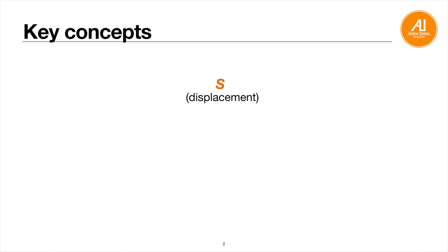Let's go through some key concepts first. Displacement is represented by the symbol S, velocity is V, and acceleration is A. For those of you who are familiar with physics kinematics, these are quite similar. Now let's see how we're going to include differentiation and integration into this topic.